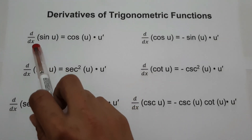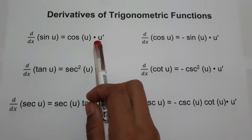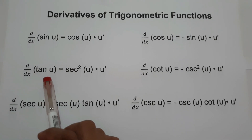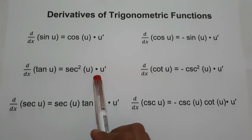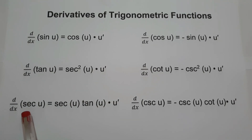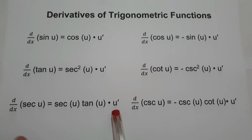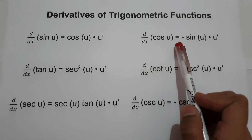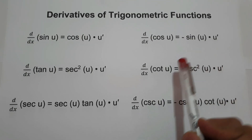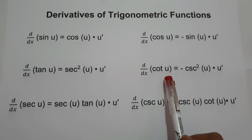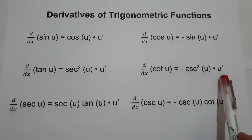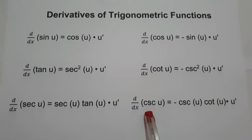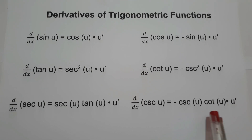The derivative of sin(u) is cos(u) times u'. The derivative of tan(u) is sec²(u) multiplied by u'. The derivative of sec(u) is sec(u) times tan(u) multiplied by u'. The derivative of cos(u) is negative sin(u) times u'. The derivative of cot(u) is negative csc²(u) times u'. And the derivative of csc(u) is negative csc(u) times cot(u) multiplied by u'. These are the things we need to remember to find the derivative of a trigonometric function.